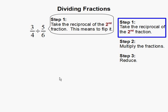Step 1, take the reciprocal of the second fraction. And the reciprocal means to flip the fraction. So 5 over 6, the reciprocal of that is 6 over 5.